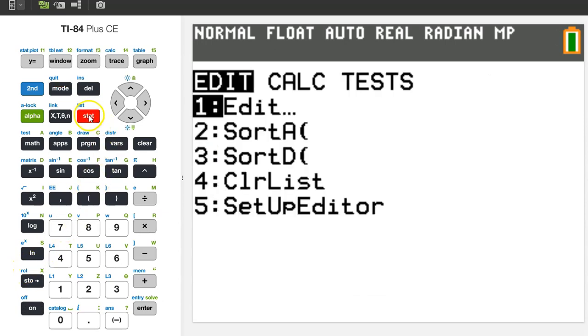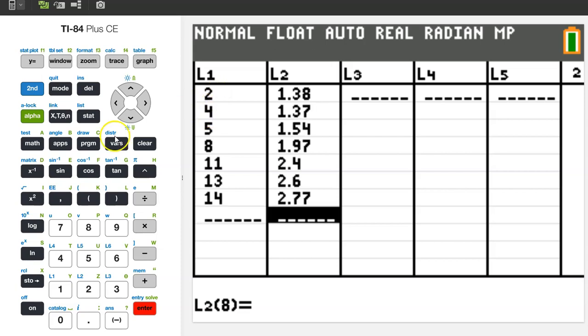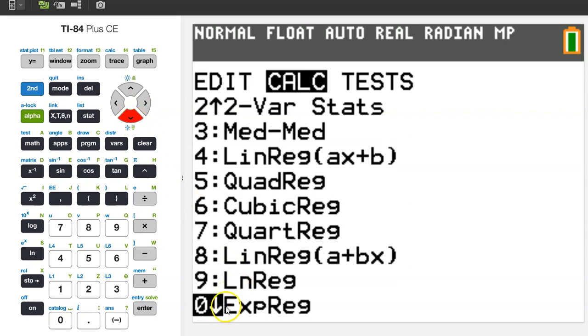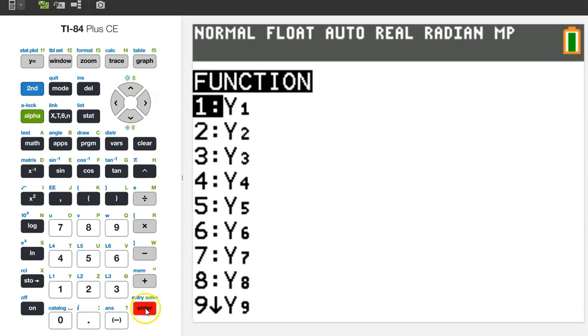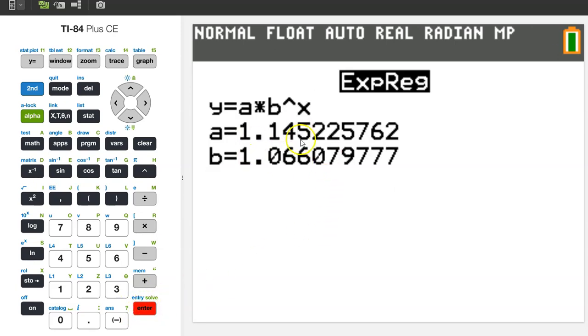This problem is calculator active. Hit the STAT button and hit ENTER. Let's enter the input values in L1 and enter the output values in L2. Remember to only enter 2 for 2002, 4 for 2004, and so on. Once you have entered all the data, hit the STAT button, switch over to the CALC menu, and scroll down to Exponential Regression. This is option 0. Before calculating the regression model, I always recommend storing the regression model in Y1. So hit VARS, switch over to YVARS, hit ENTER, and ENTER again. That way, if we need this equation later, we will find it right here. For now, hit ENTER a couple more times. And kabam, there's your regression model.